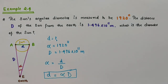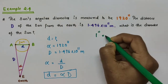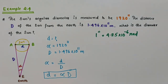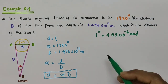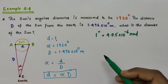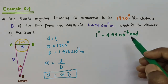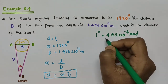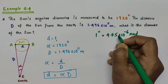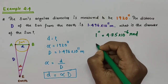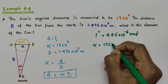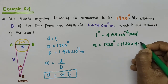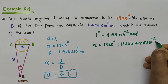We know that 1 arc second = 4.85 × 10⁻⁶ radians — this was derived in our previous video, link in the description box. So alpha, which equals 1920 arc seconds, will be equal to 1920 × 4.85 × 10⁻⁶ radians.